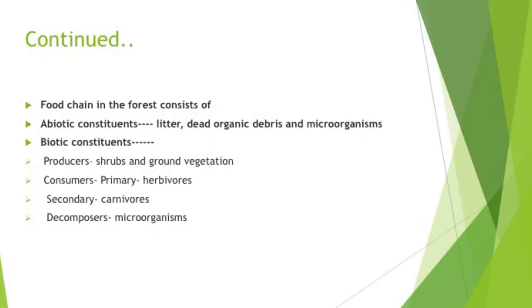Trees are the prime producers for the forests — they purify and cool the air and control the climate. The food chain in the forest consists of abiotic constituents including litter, dead organic debris and microorganisms, while the biotic constituents include producers such as shrubs and ground vegetation, primary consumers like herbivores, secondary consumers like carnivores, and decomposers including microorganisms.